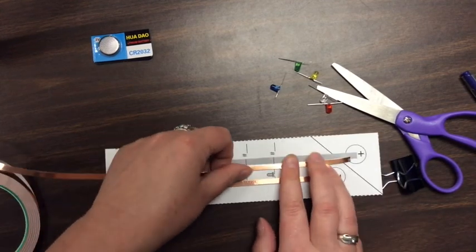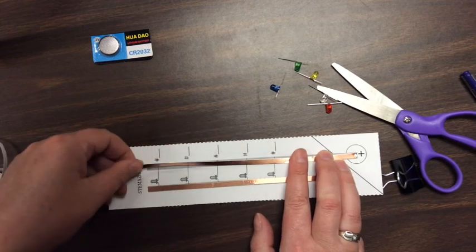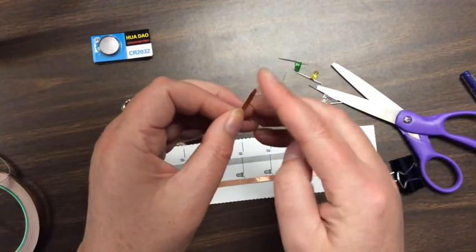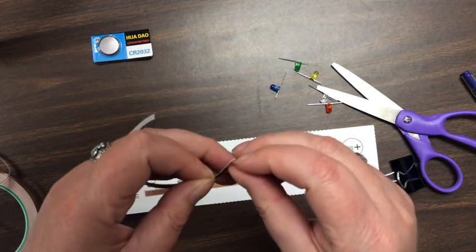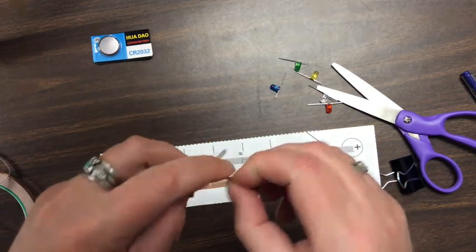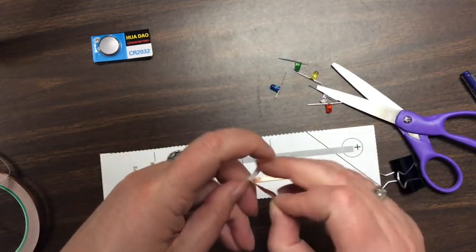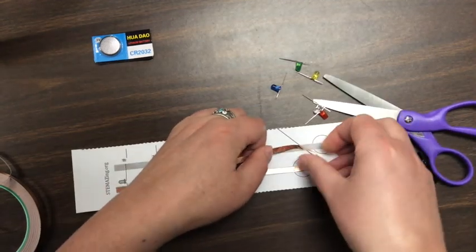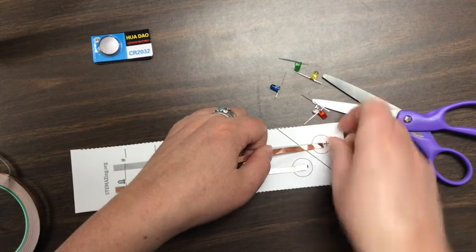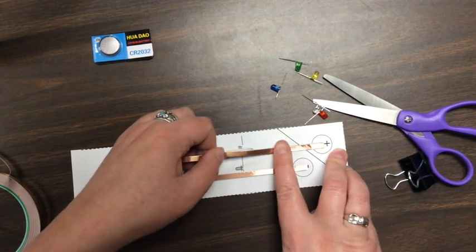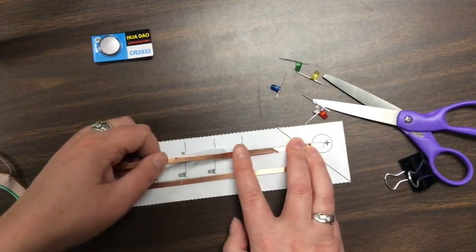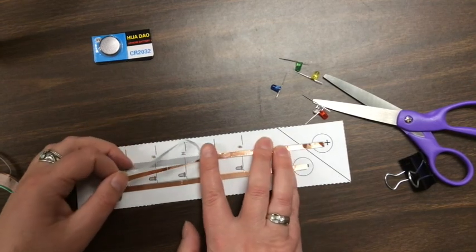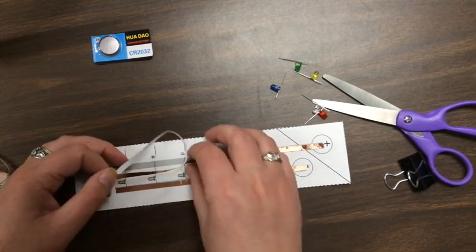Now we need to do the positive lead, so we'll measure out our copper tape, tear it off again, get it started by rubbing our finger here, pull this off just a little bit, bend the backing back, get it started. And here again, just tack it down every inch or so so that it stays lined up.